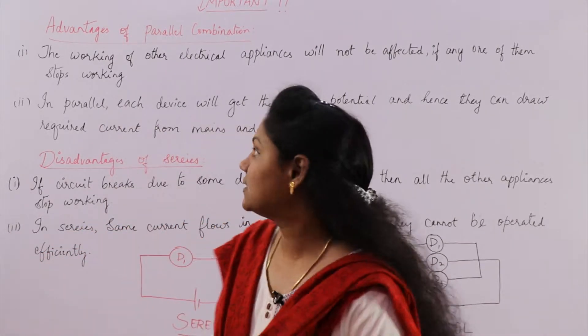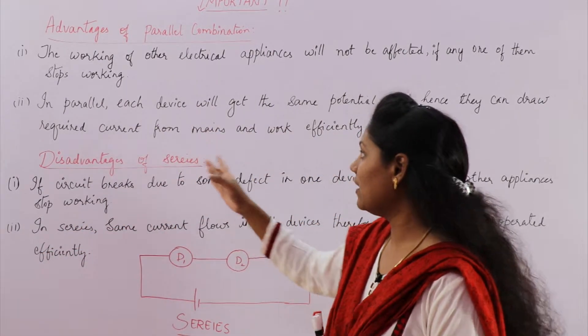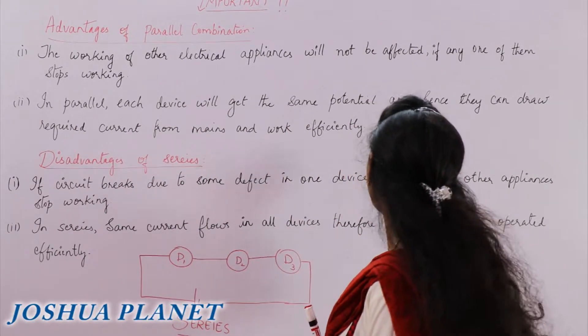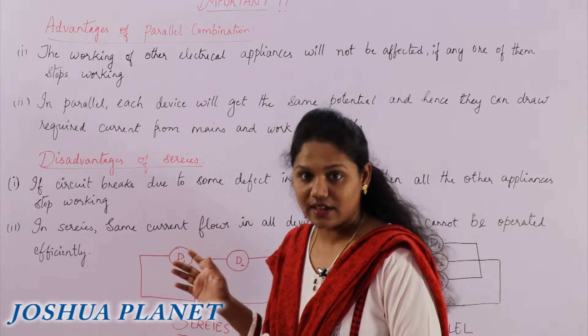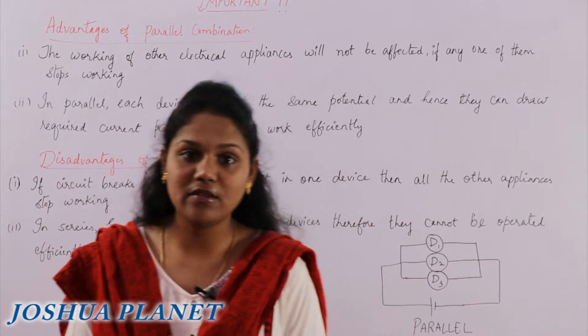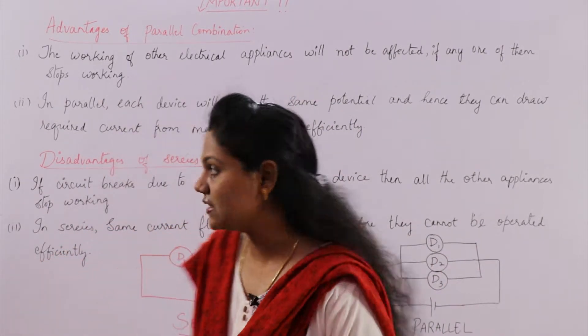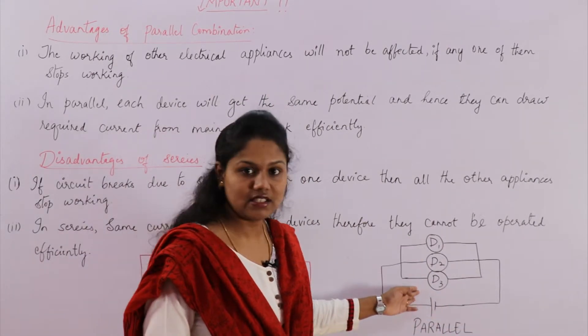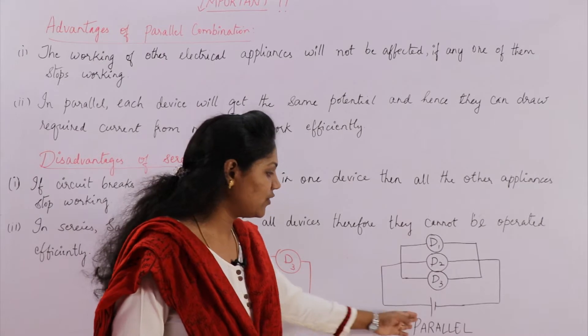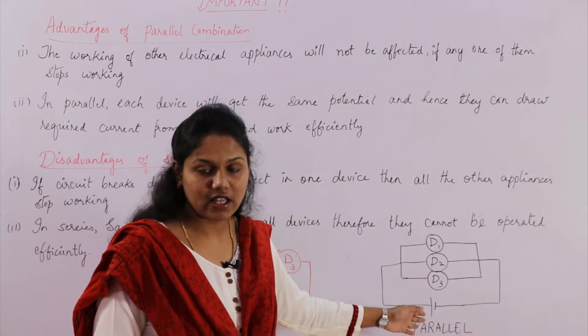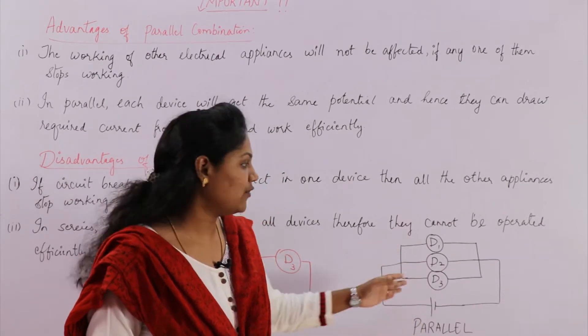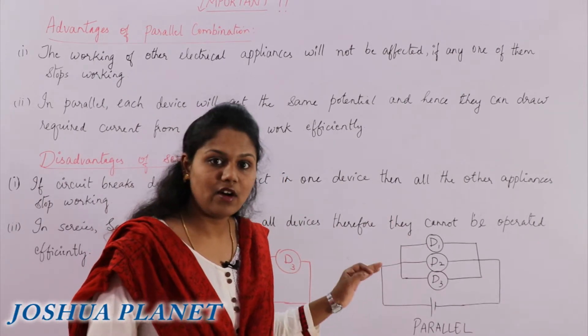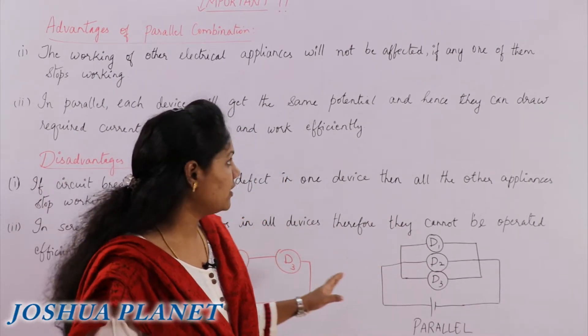Now, the second point, what does the second point say? In parallel, each device will get the same potential and therefore they can draw required current from the main and therefore they will work efficiently. In the sense, see the parallel combination, you have three different devices which is getting equal current from the main, right? So they are getting equal current and therefore they are not dependent on another one and they will work efficiently. So they are not altered.